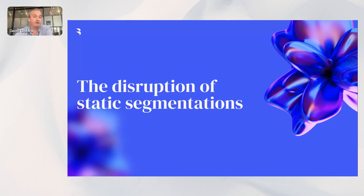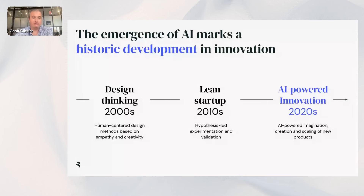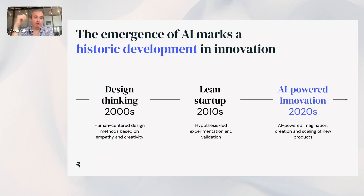We'll start with the overall disruption of static segmentations — a view of how we see the market evolving based on the last year or so of deploying generative AI tools in our business. The emergence of generative AI marks a historic development in the way companies can innovate and think about marketing, customer insights, new product ideas, and even the role of marketing itself. In the 2000s, everyone was thinking about design thinking and human-centered design methods, really focused on empathy and creativity. Segmentation took off on that basis — how do you have a really detailed understanding of different types of consumers and what are their real needs?